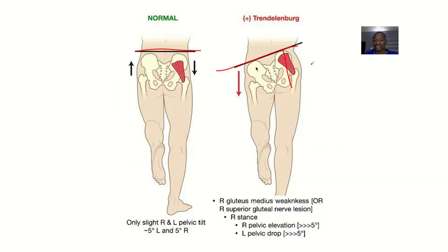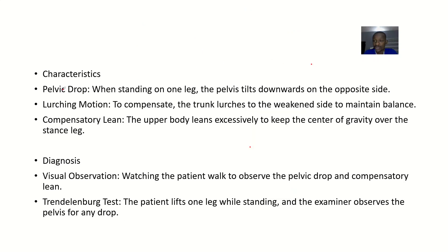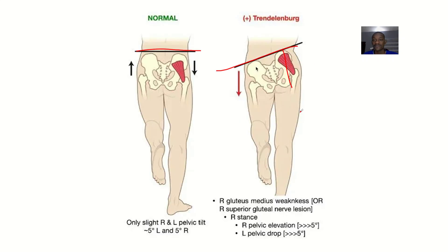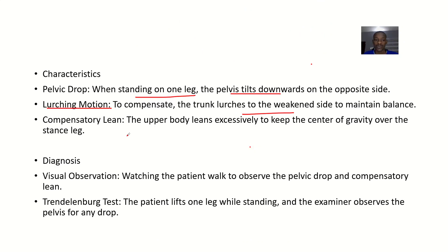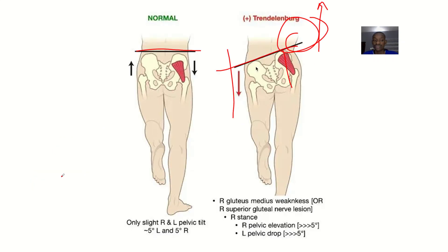Post-surgical complications such as after a total hip replacement can also be a cause. The key characteristic is a pelvic or hip drop — when standing on one leg, the pelvis tilts downward on the opposite side. To compensate, the trunk lurches toward the weakened side to maintain balance, with the upper body leaning excessively to keep the center of gravity over the stance leg.